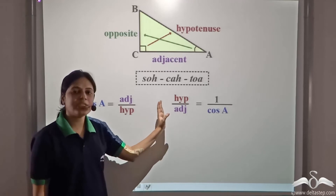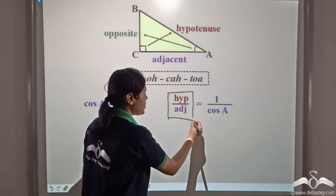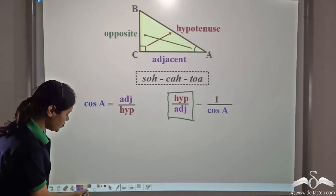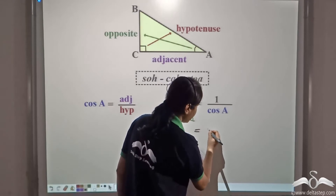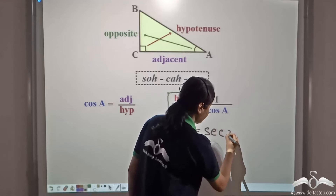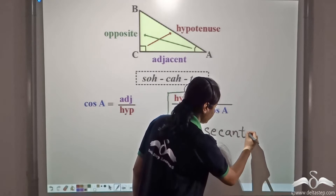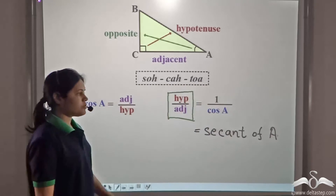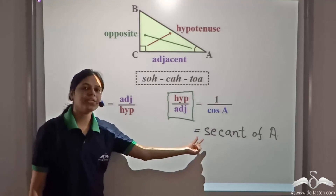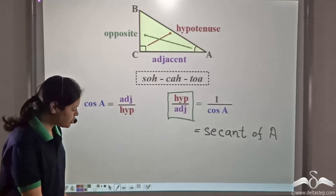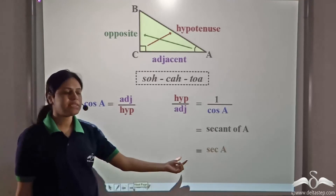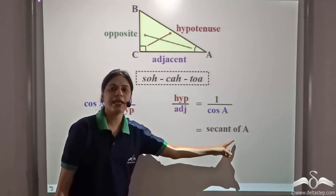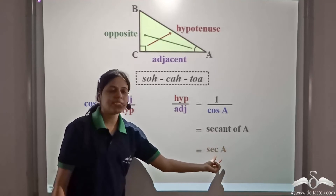So, even this ratio is given a special name. It is called secant of A. So, this ratio is called secant of A. In short, it is called sec A.